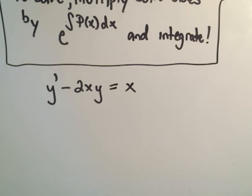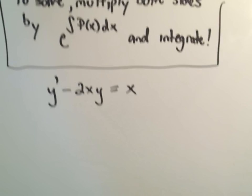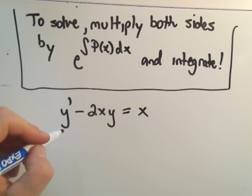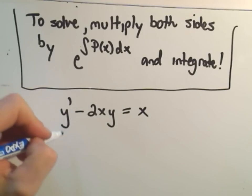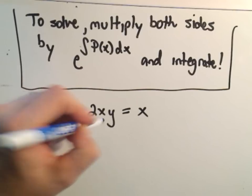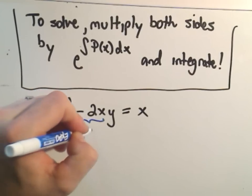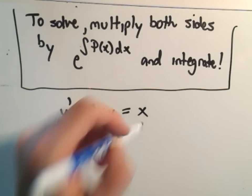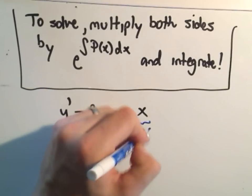So if you'll look at our problem here, notice this is in fact a linear differential equation. Here's our dy/dx. This will be our term P(x), so it'll be negative 2x, and so there's our y equal to, and here's our Q(x) on the right side.